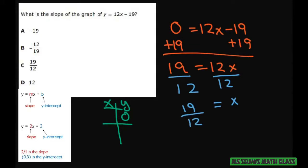So that is where this answer is coming from. Your x-intercept would be 19 over 12, comma 0.